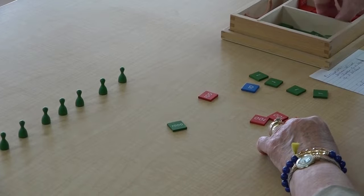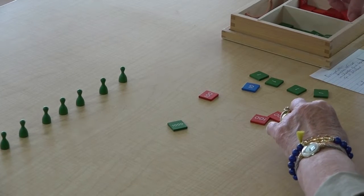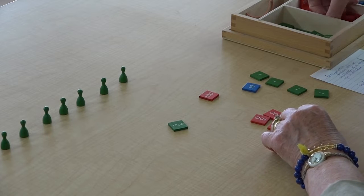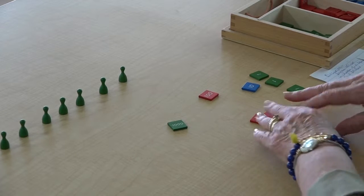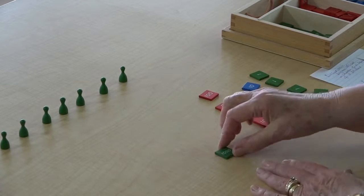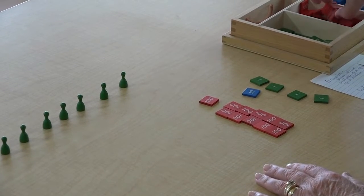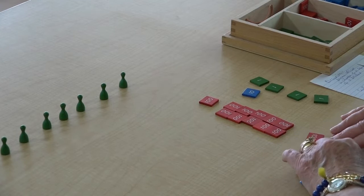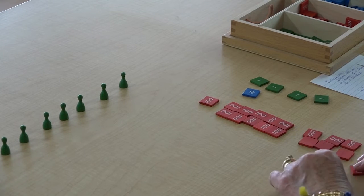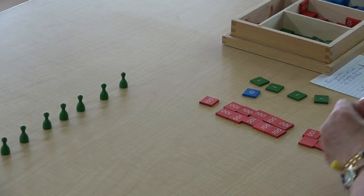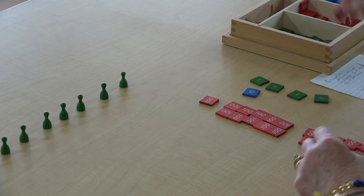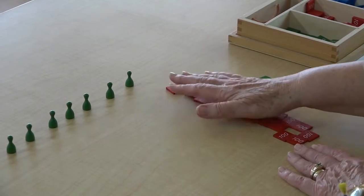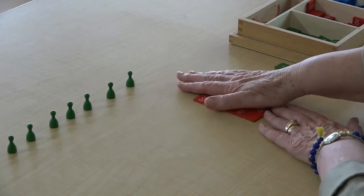But we have to also exchange this 1,000 for 10 hundreds. 2, 4, 6, 8, 10. All right, do we have enough hundreds now that we can share equally? Yes, we do. We have 21 hundreds. So let's share equally.